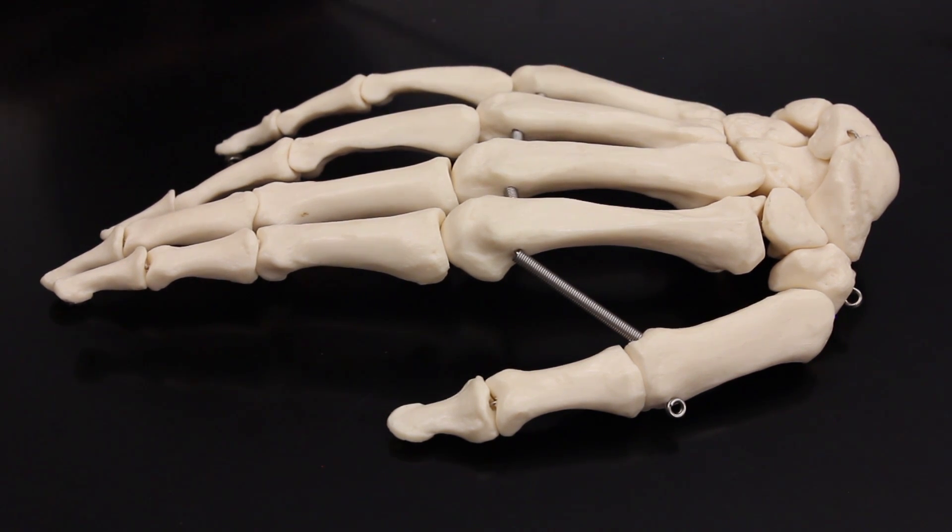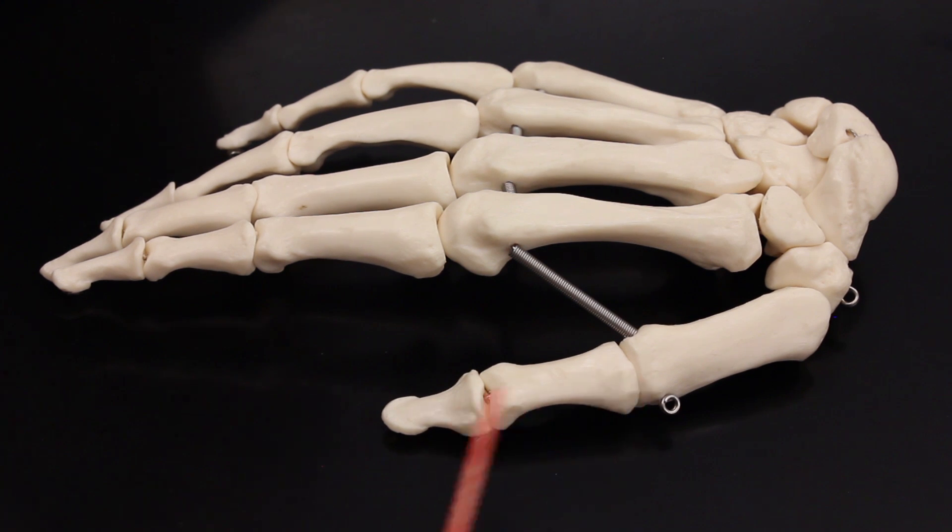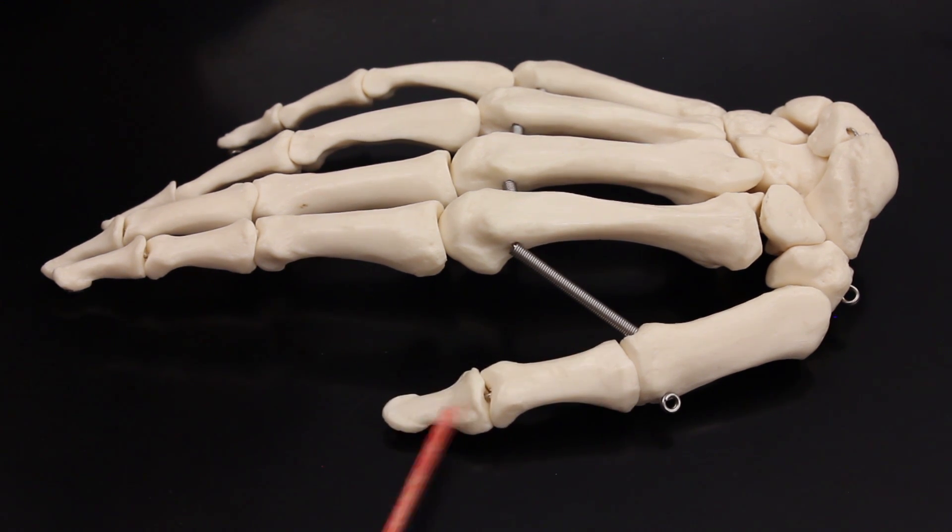Now these things coming off of the metacarpals are your phalanges. But each individual one is called a phalanx. So this one is called the proximal phalanx, and this one's called the distal phalanx of the first digit.